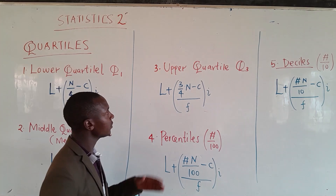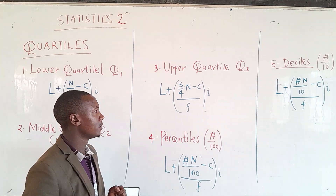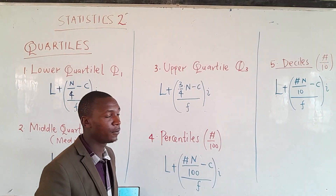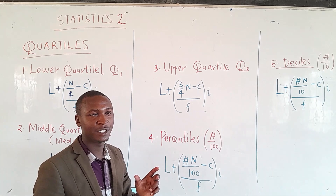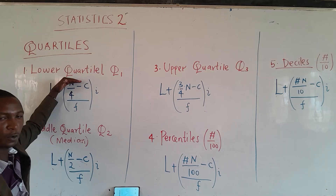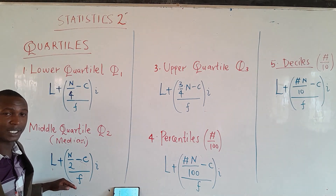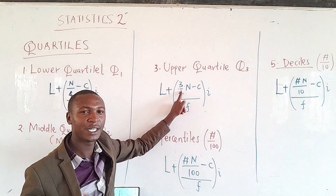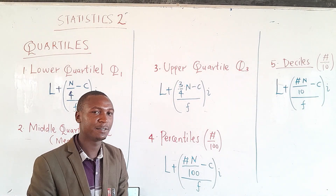We also have the upper quartile, Q3. The upper quartile is calculated by multiplying the total frequency by three over four. For example, if you have 100 objects, Q1 is one quarter of that which is 25, Q2 is half of that which is 50, and Q3 is three quarters of 100 which is 75. You use that value of 75 together with the cumulative frequency to locate the Q3 class.